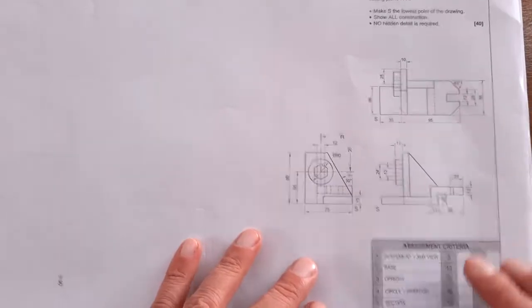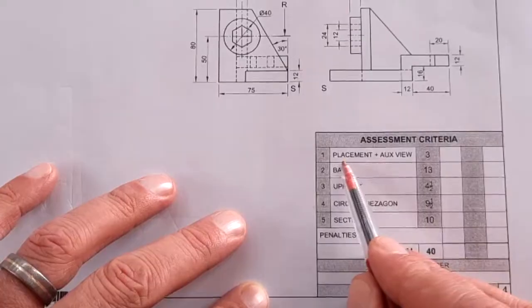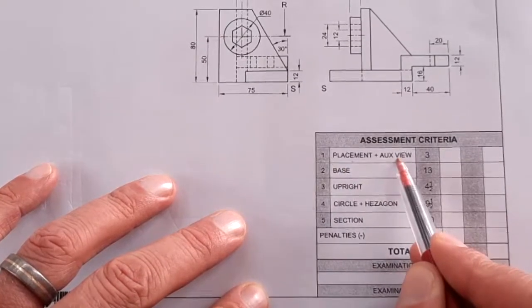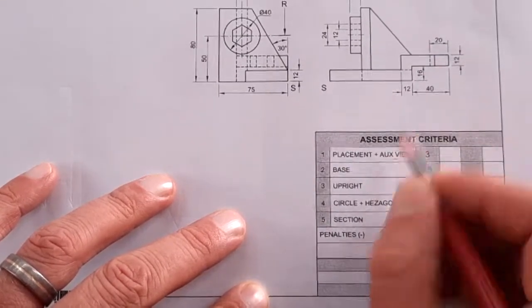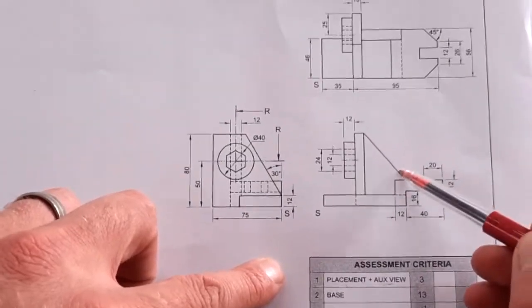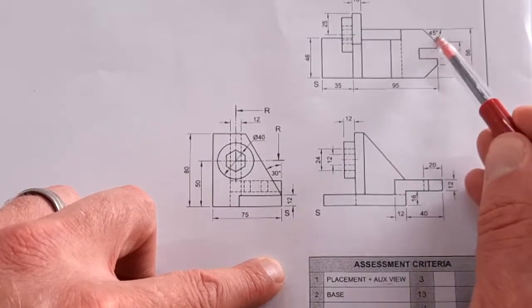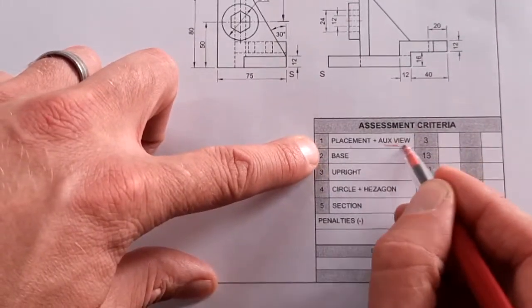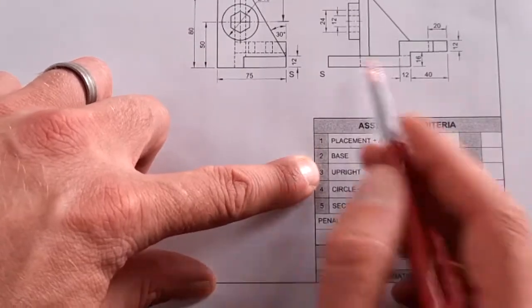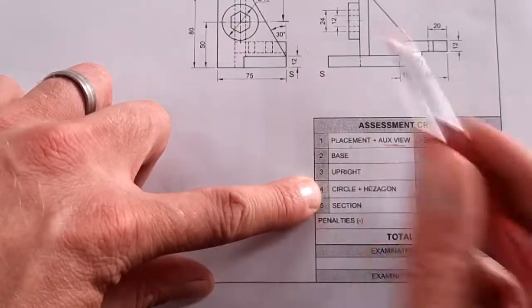If you look at the actual assessment criteria at the bottom, you'll see what they're giving marks for. The placement, did you draw the auxiliary views required for this drawing? Auxiliary views will always be required where you see lines like this, which are non-isometric lines, especially when you see degrees. The base of this drawing, the upright parts, the circle and the hexagon, and then the section all count towards your final 40 marks.